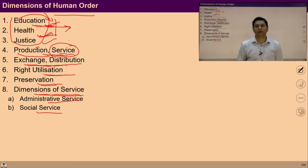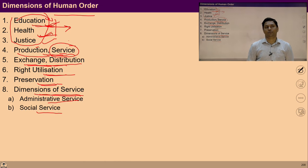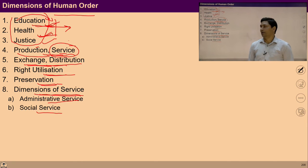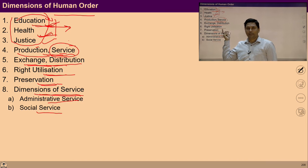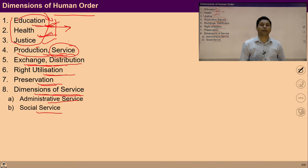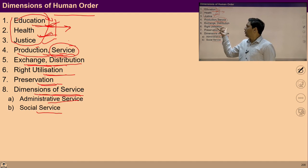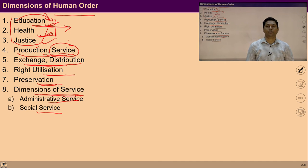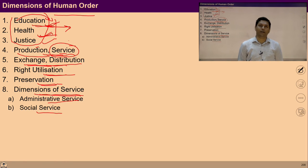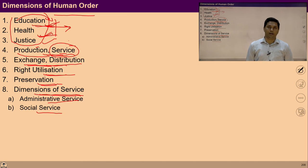Two more things are required while exchanging: right utilization and preservation. Whatever is being produced, we should rightly utilize those things. If we do not right-utilize things, they may not be available to the rest of the people and it may create chaos in society. So right utilization plays a very important role in ensuring human order. A program needs to be made to ensure right utilization in society, and people should be aware of how to rightly utilize resources so they remain available generation by generation.